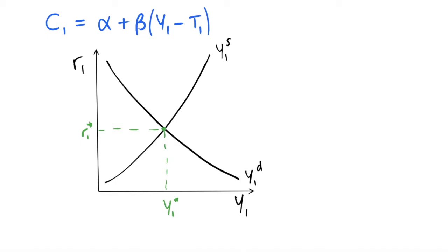We look at disposable income, so we take the lump sum tax T1 away from our income Y1. Beta can be viewed as the marginal propensity to consume.